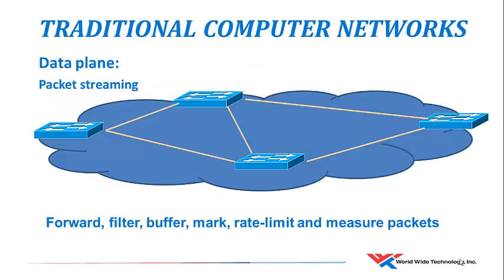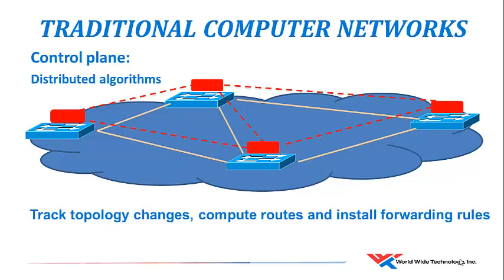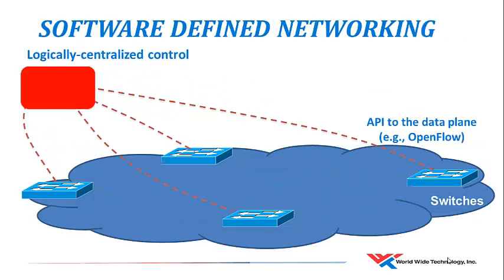This slide represents the transition from a traditional network to a software-defined network using a separated control plane. What you see here is a representation of the data plane. The white lines represent the packet streaming between the physical devices, and the red boxes are the control planes that are directly attached to the forwarding planes, and the red dotted lines represent the control planes that allow these autonomous devices to form a federation. OpenFlow changes this configuration and logically centralizes the control planes, providing a global view of the network.